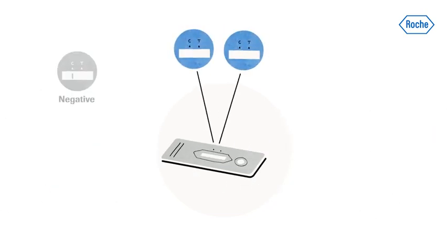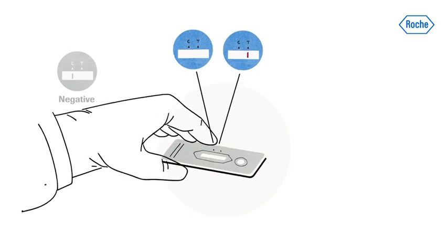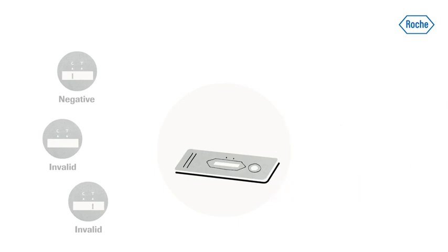If no control line C is visible, the result is always invalid and the test should be repeated using a new device.